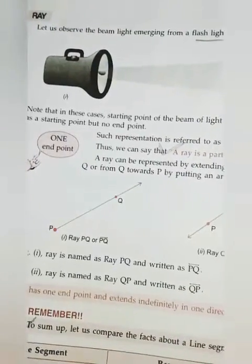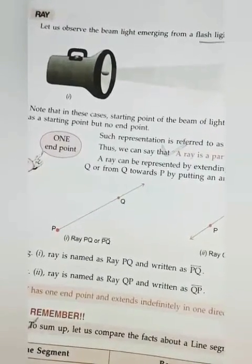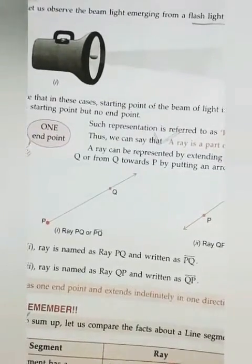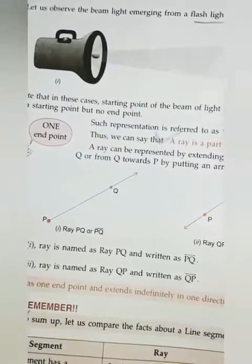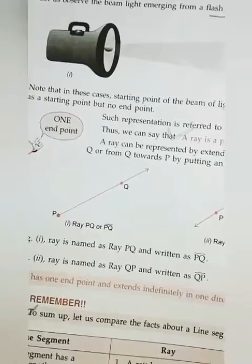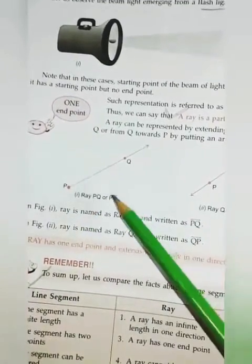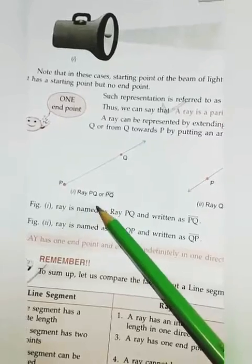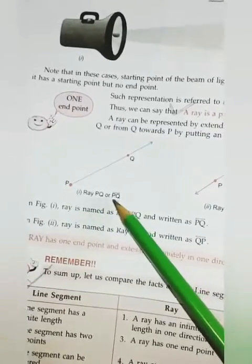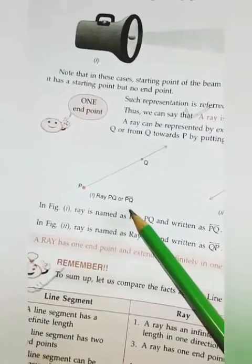Now comes to ray. What is a ray? A ray is a part of a line which has only one end point. For example, here PQ ray. You can write like this, ray PQ or PQ with one arrow mark.